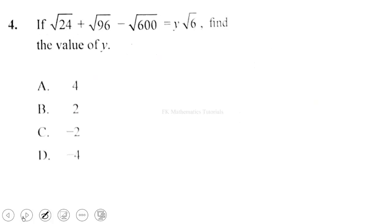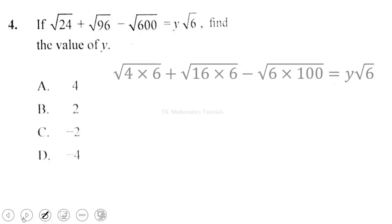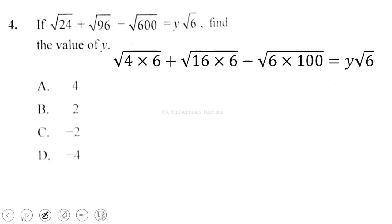Question 4: if √24 + √96 − √600 = y√6, find the value of y. We express each term by factoring out 6: 24 = 4 × 6, 96 = 16 × 6, and 600 = 100 × 6. So the expression becomes √(4×6) + √(16×6) − √(100×6).